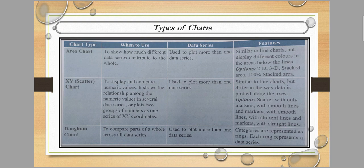Next is the area chart, which is similar to the line chart. It shows how different data series contribute to the whole. It is used to plot more than one data series. Features are similar to line charts, but it displays different colors in the area below each line, making it easy to distinguish between data series.